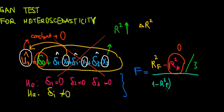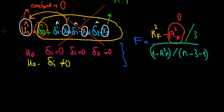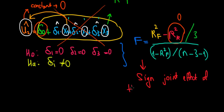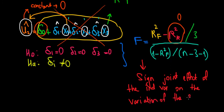We take that relative to 1 minus the R-squared of the full model. And again, we take into account the degrees of freedom, which is the number of observations minus the number of independent variables in the full model (1, 2, 3) minus 1. Whatever that F-value is, we compare it with the critical value as always. That can tell us whether there is a joint effect of the independent variables on the variation of the error terms or not. If we do have a significant result, we conclude that there is a significant joint effect of the independent variables on the variation of the error term.